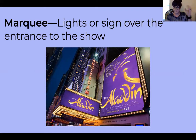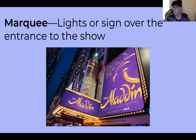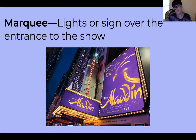The first vocabulary term we're going to talk about is marquee. Marquee is lights or a sign over the entrance of a show. This picture is just an example of what a marquee might look like for a Broadway show. If you have gone to an old-timey movie theater before, where there's a sign kind of in the front before you walk in — that's what a marquee is.